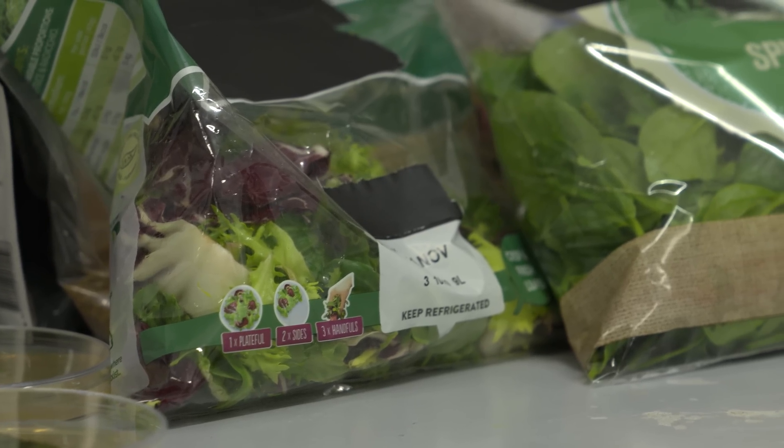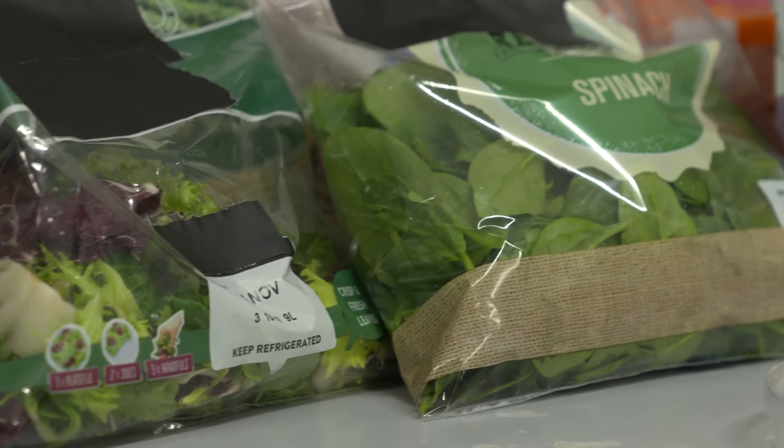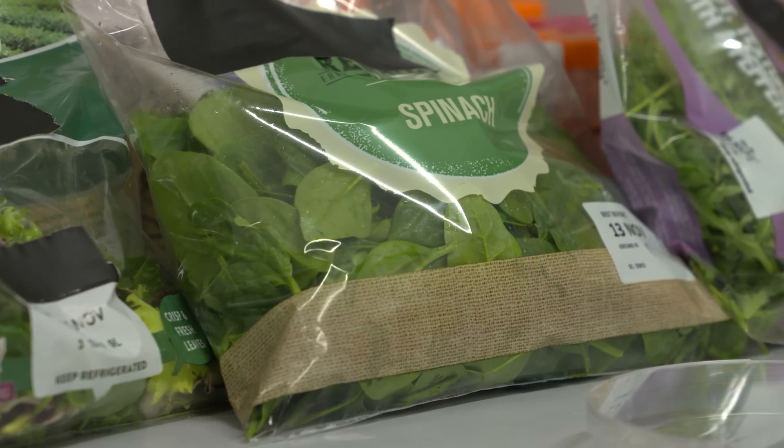The very first thing we did was go out, buy some bagged salads, and separate them into different salad leaf sorts. So we had spinach, rockets, lamb's lettuce, and all the various colored salad leaves you find.